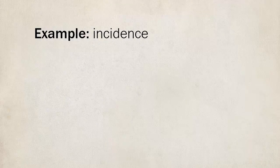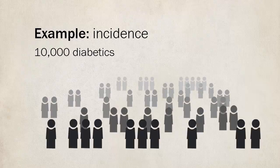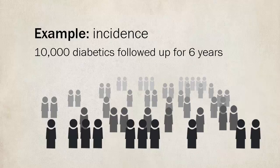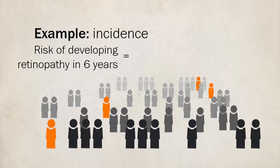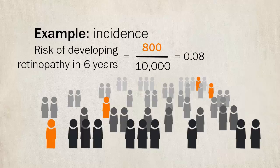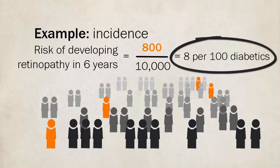In this example, we see how incidence can help medical professionals predict the probability of a complication developing. In our study population, we have 10,000 insulin-dependent diabetics over the age of 40. They were followed up for a period of 6 years to see how many developed background retinopathy. 800 new cases were identified in that period. To calculate the risk or incidence of developing retinopathy, we take the number of new cases, 800, and divide by 10,000 — the population being followed up. This gives us a risk of 0.08, or 8 new cases in every 100 diabetics developing background changes in their retina in 6 years.